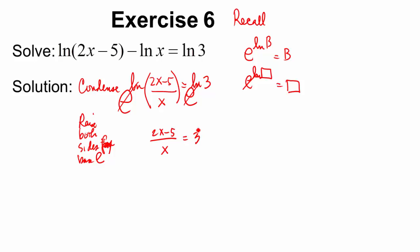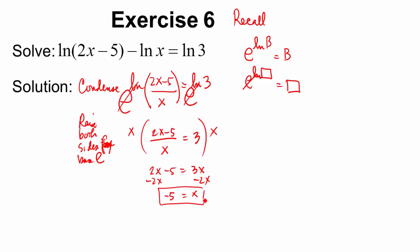Multiply both sides by x (x cannot be 0): 2x minus 5 equals 3x. Subtract 2x from both sides: x equals negative 5. Now check: plugging negative 5 back in gives negative arguments in both log expressions. So this is not a valid solution — there is no solution to this equation.